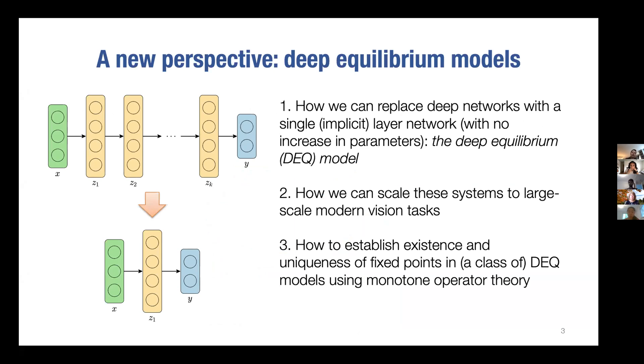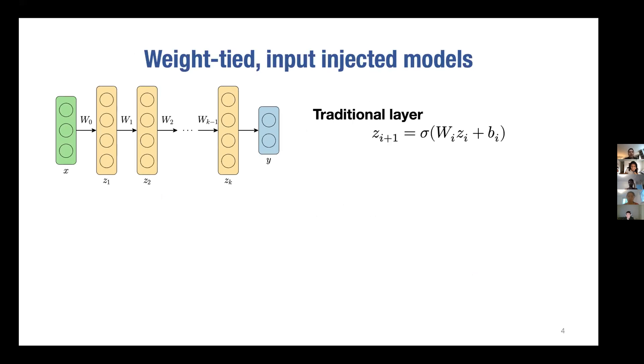I'm going to talk about how some of our current research replaces deep networks with single layer networks - they're more complicated layers, they're implicit layers, but they don't increase parameters at all and they work just as well. How we can scale these systems to large-scale modern vision tasks like image classification and segmentation, and then how we establish things like existence and uniqueness of these operations. This is very much ongoing work, so if you're interested, please send me an email.